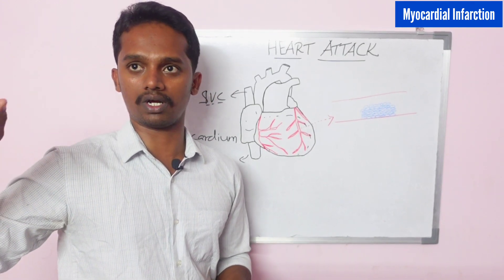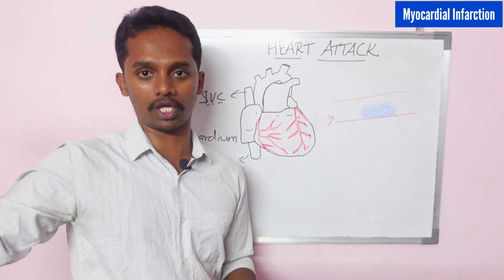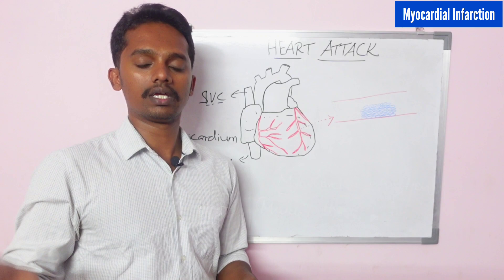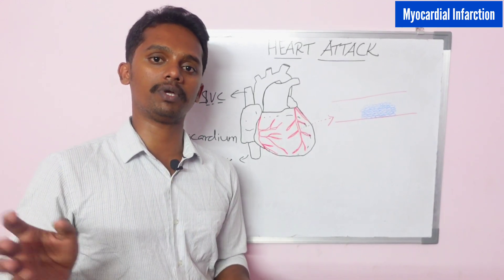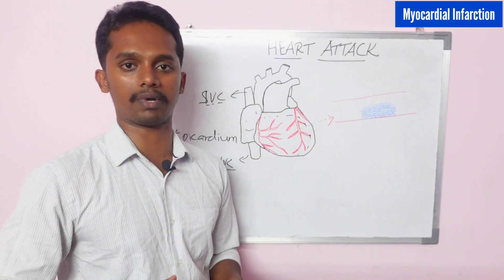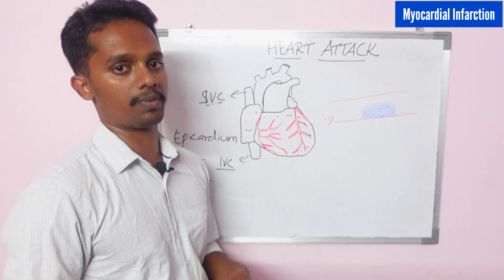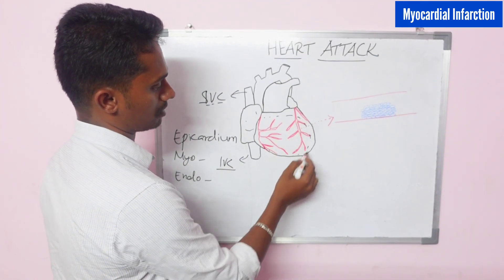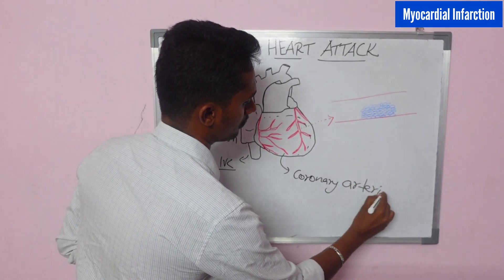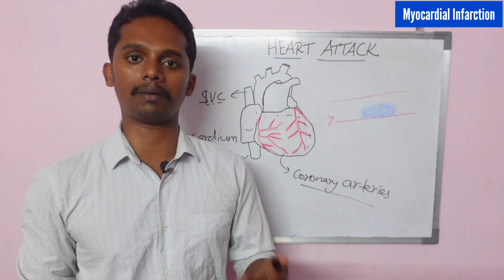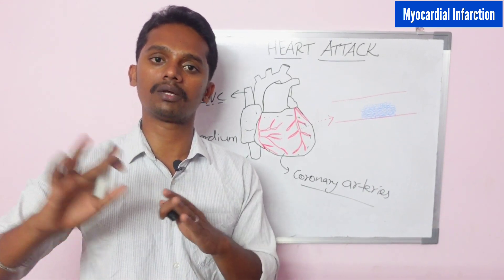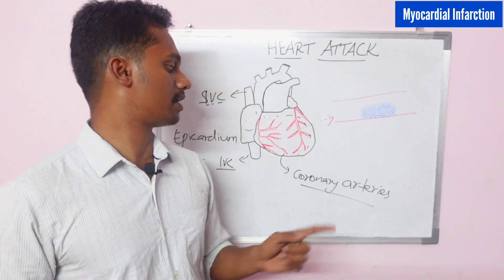We know the heart's blood vessels. In the heart, we have the coronary blood vessels. Coronary arteries are arteries that supply oxygen-rich blood to the heart muscle. That is how the heart is supplied well with blood. The heart receives its oxygen and nutrients through coronary arteries.